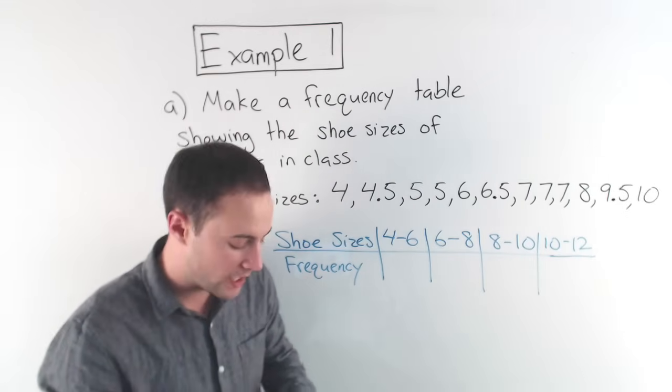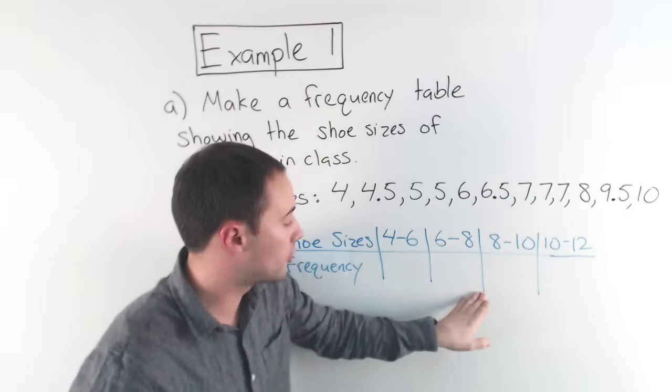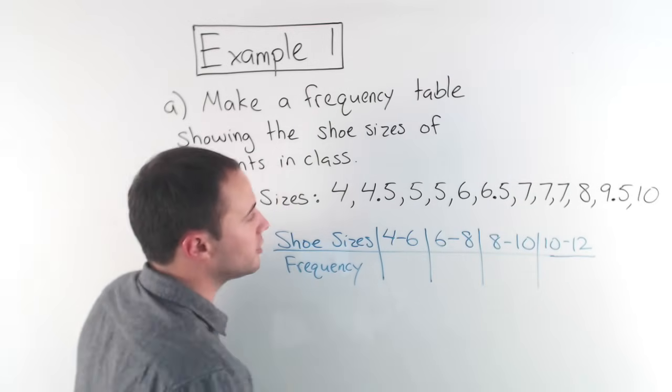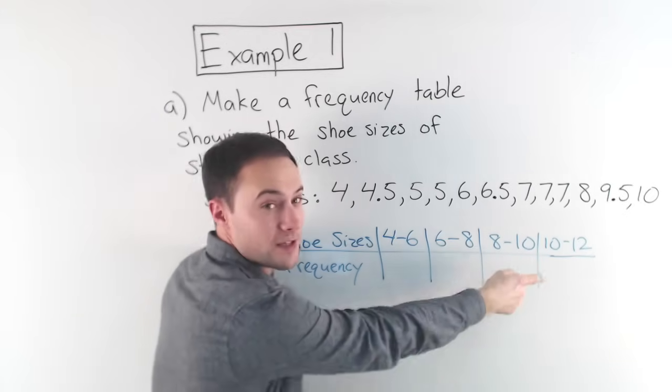But if you notice, well if I go from four to six and then seven to nine, well what about a six and a half? There's a six and a half. That would have no place to go. So instead you would do it like this. Four to six, this one would be six to eight, eight to ten, and ten to twelve. So notice there, there are no gaps. So even if we have decimals, there'll be a place for them.